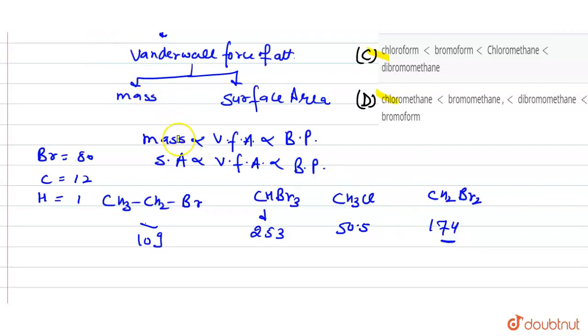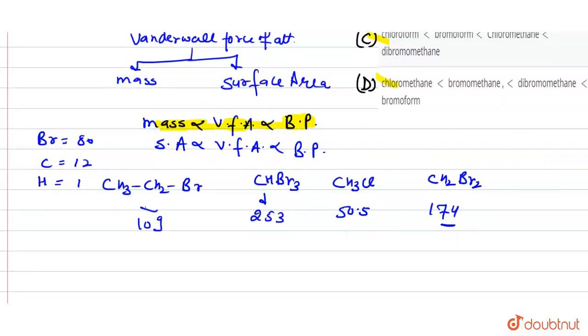We have said the more the mass, the more the Van der Waals force, and the more the boiling point. First of all, what will be the order? Chloromethane, then bromomethane, then dibromomethane, then bromoethane. Now I have to match which option I have.